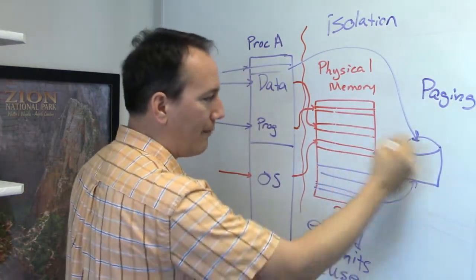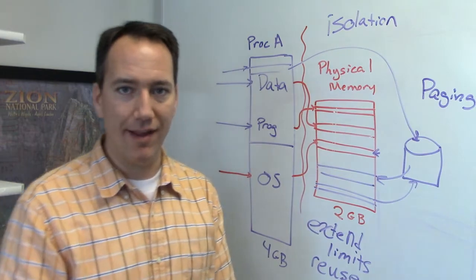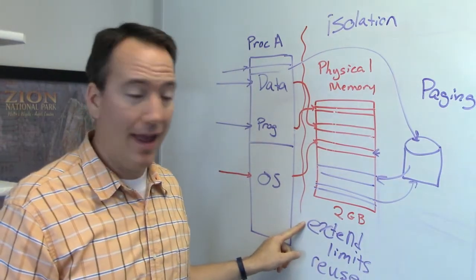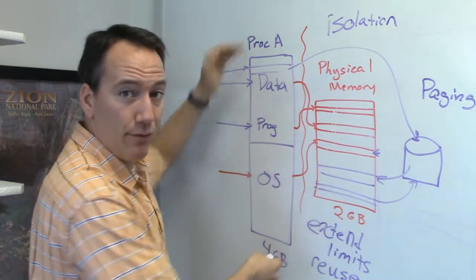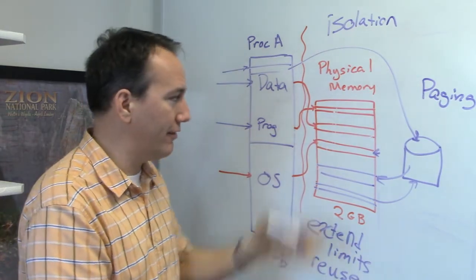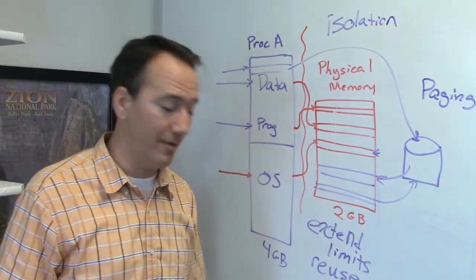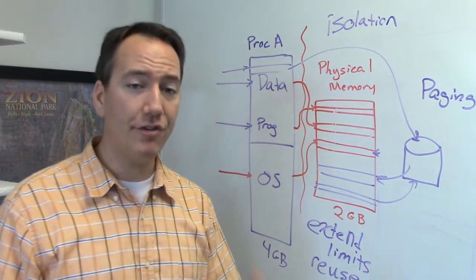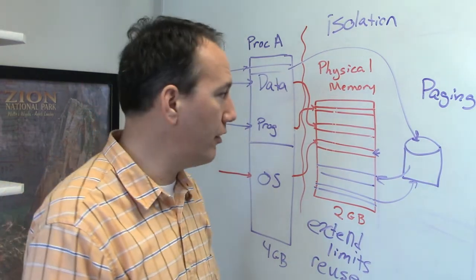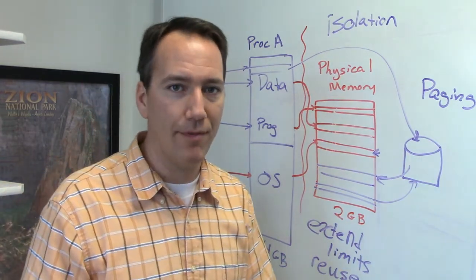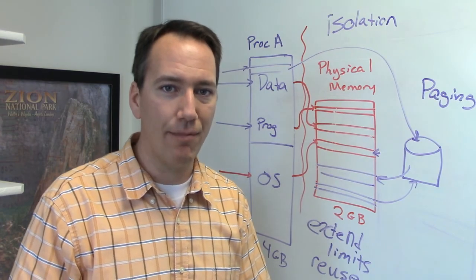And so by swapping pages in and out of memory into disk, I'm able to extend the limits of my memory and also make it so that I do have up to four gigabytes of RAM, even if there's not four gigabytes physically installed on the machine. So these are all benefits of virtual memory, and it's all work that the memory manager does as part of the operating system.